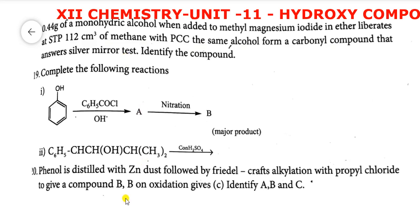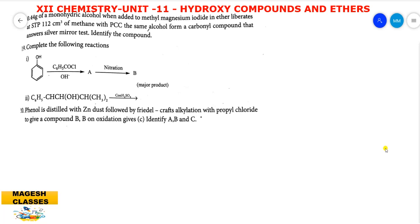So what is that alcohol? Here the information gives 0.44 gram of monohydric alcohol when added to methyl magnesium iodide. So this is a reaction. Whenever the alcohol is treated with the Grignard reagent, for example, this alcohol is treated with CH3MgI. What is the product you get? The alkane part of the Grignard reagent and magnesium iodide and the alkoxide. So here one mole of methane and one mole of the alcohol.